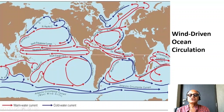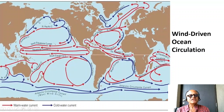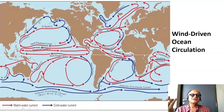Kuroshio here, Gulf Stream here. The Indian Ocean is a mess because of the reversing monsoonal circulations — in winter you have winds from the northeast, and in summer from the southwest. So it doesn't have a persistent western boundary current, but it does have a very strong Somali current that is a western boundary current but completely reverses sign.